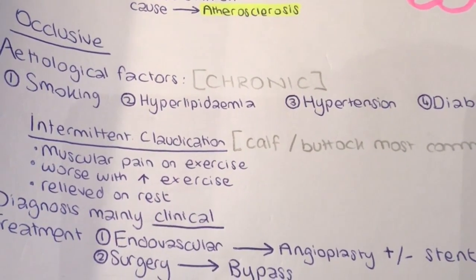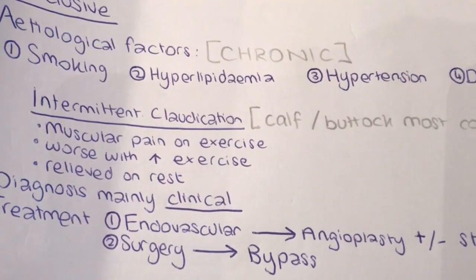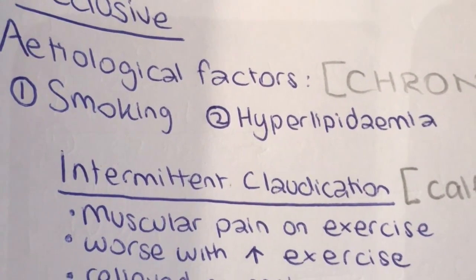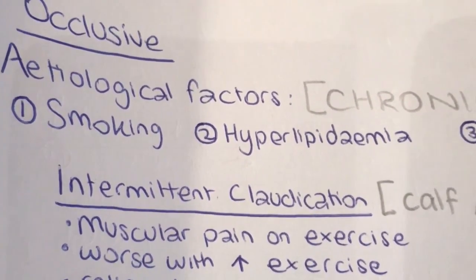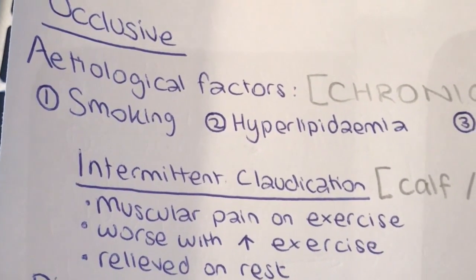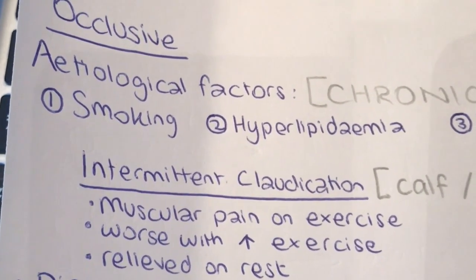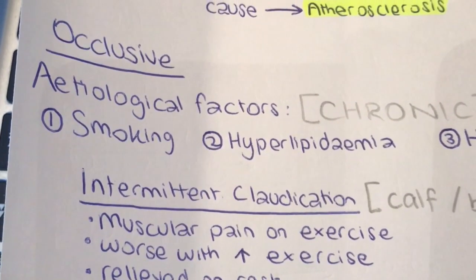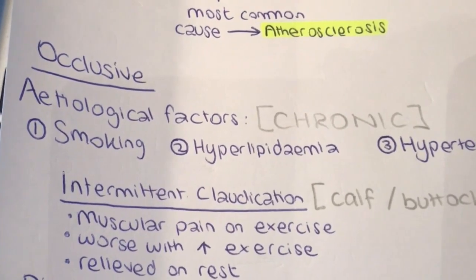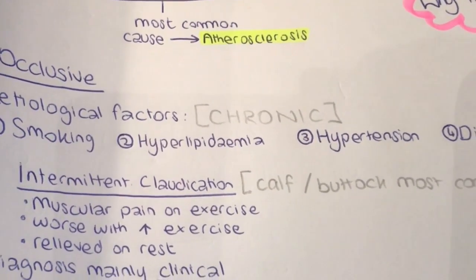One symptom that patients first start to complain about is called intermittent claudication. The three most important things about intermittent claudication are: muscular pain on exercise, this pain gets worse with increased exercise or increased exercise intensity, and the pain is relieved by rest. The most common places people complain about this pain are the calf and the buttock.